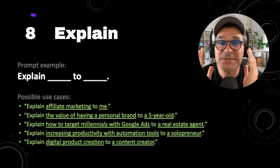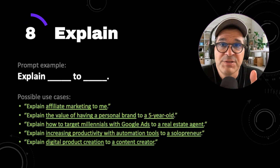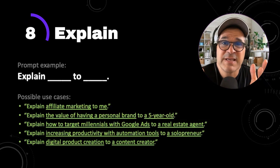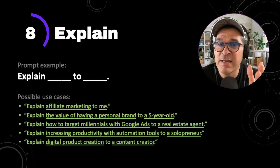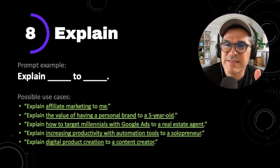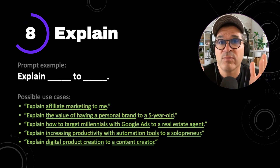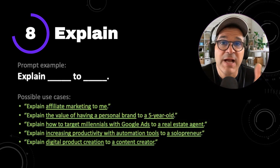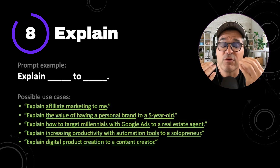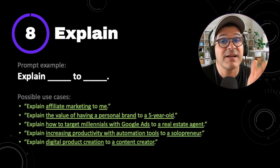Power prompt number eight is explain. Most people start out using ChatGPT like they do a search engine — they ask it questions. What if you could take it a step further and ask it to explain things for you? The prompt example is explain blank to blank — explain topic to person. For example: explain affiliate marketing to me, explain the value of having a personal brand to a five-year-old, or explain digital product creation to a content creator. Keep in mind that explain is also a great follow-up prompt — if ChatGPT gives you a response you don't understand, simply ask it to explain the parts you're not clear on.